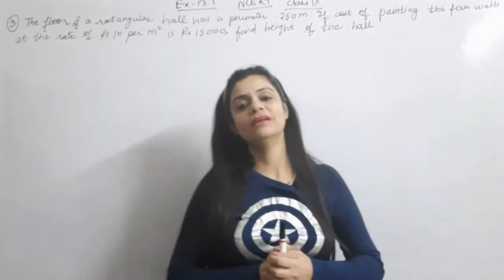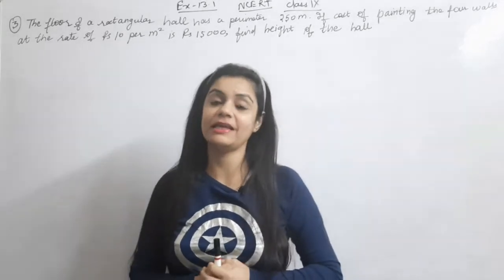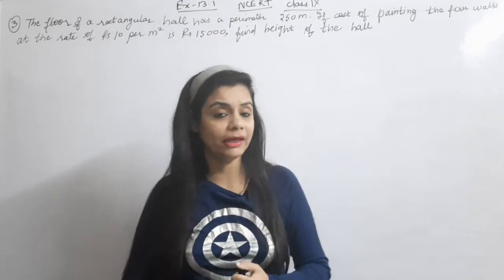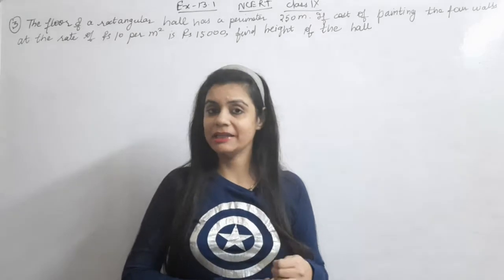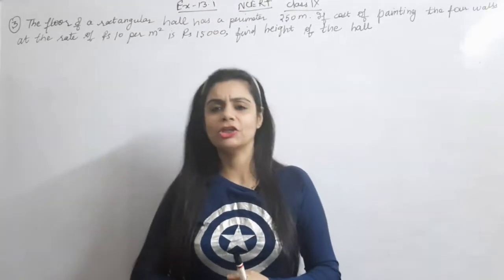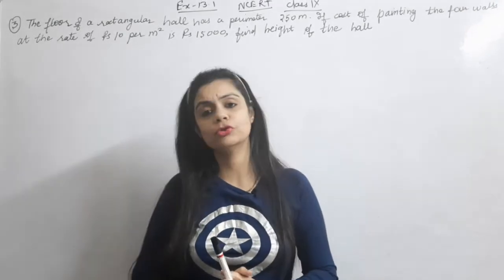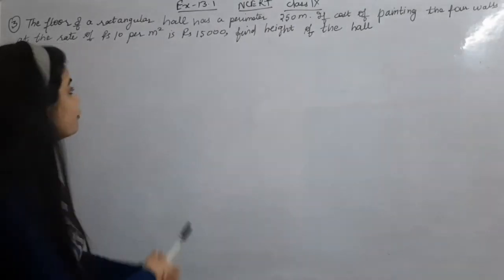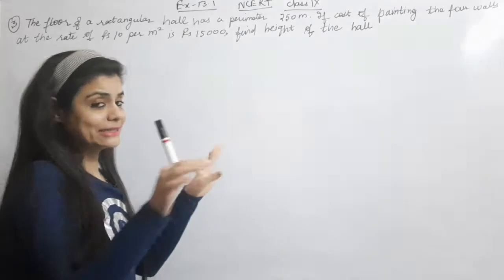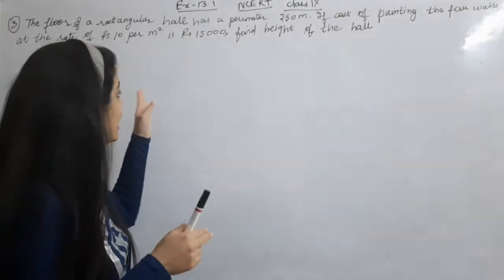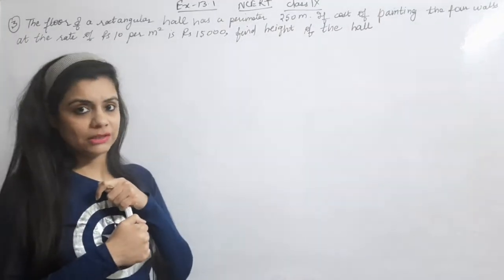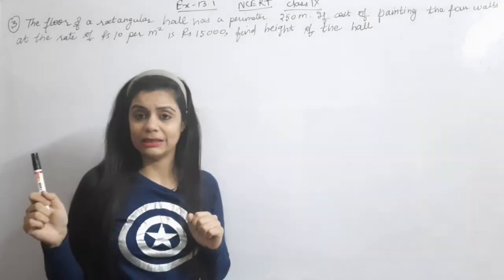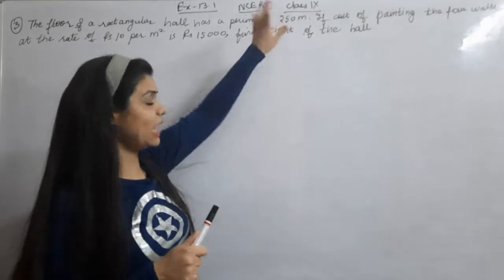Hi students, we are doing mensuration — volume and surface area — of Class 9, Exercise 13.1. In my last video I gave you solutions of question number one and two. Today we are going to do the third and fourth question. First we are doing the floor of a rectangular hall, which has a perimeter given as 250 meters. The perimeter of a rectangle is 2 into L plus B, that is 2 into length plus breadth.